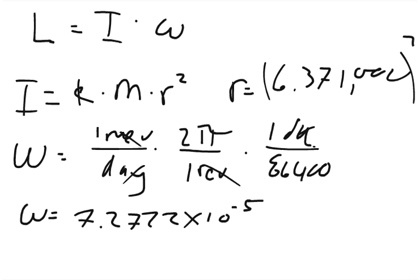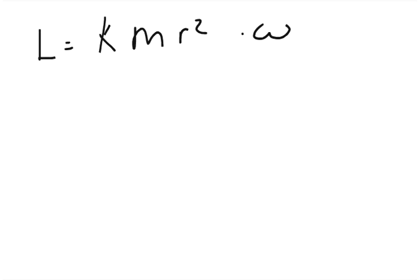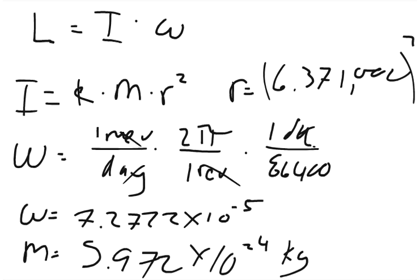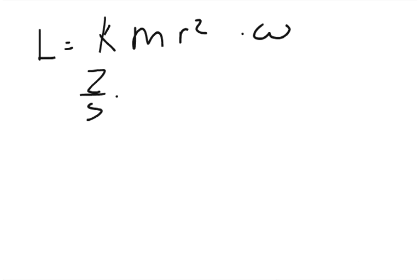From the last chapter, we learned when studying gravity that the mass of the Earth is roughly 5.972 times 10 to the 24th power kilograms. So all we've got to do is plug in all of our values. For k as a sphere is 2/5, so 2/5 times the mass of the Earth, which is 5.972 times 10 to the 24th.